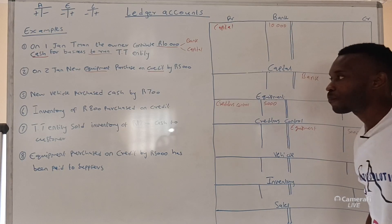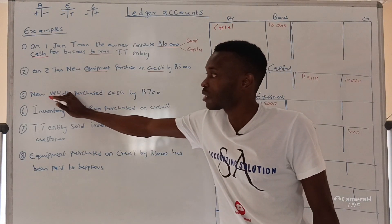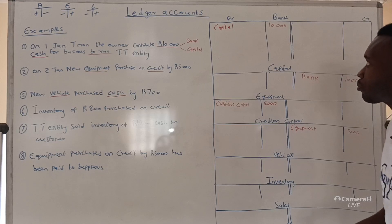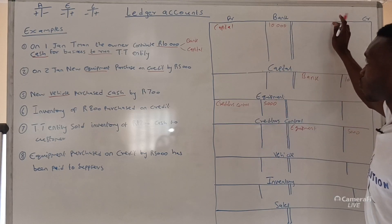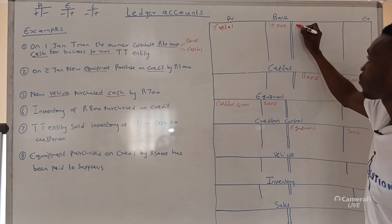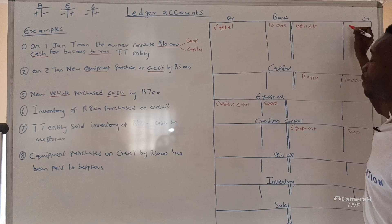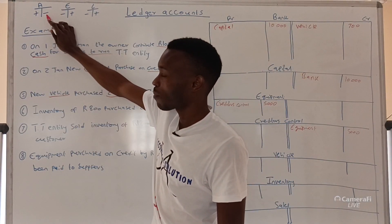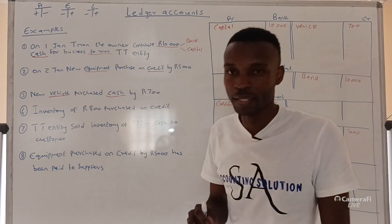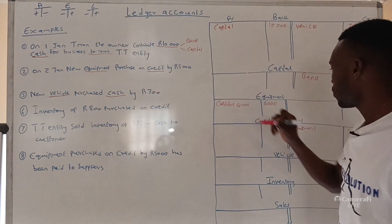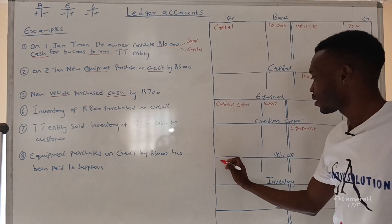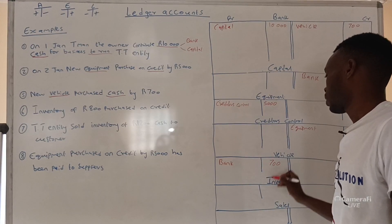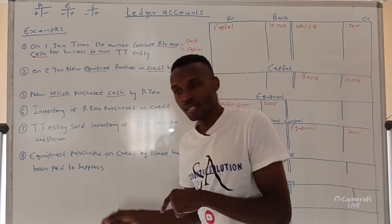Transaction three: a new vehicle purchased for cash. Two accounts affected are vehicle and bank — cash simply means bank. Because we paid, our bank is going down, so we credit bank for R700. Under vehicle, we debit R700 because our vehicle asset has increased. When we pay cash, money goes outside the bank, and bank is an asset going down, so we must indicate under vehicle that the asset increased because of cash paid.